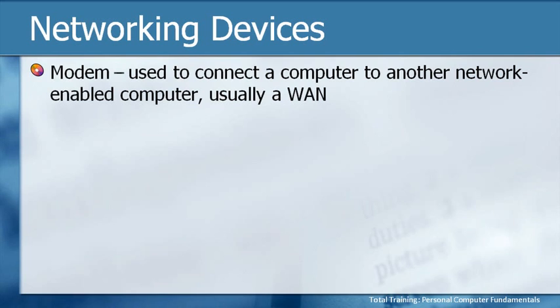There were all kinds of issues with that — they were fairly slow, and they also tied up your phone line — so we've come a long way. Now we actually have other types of modems, like a cable modem. If you get your internet connection through your cable TV provider, then you have a modem, but it's a cable modem, using the cable line instead of the phone line. So basically, a modem is just a device used to connect a computer to another network-enabled computer, usually in a wide area network.